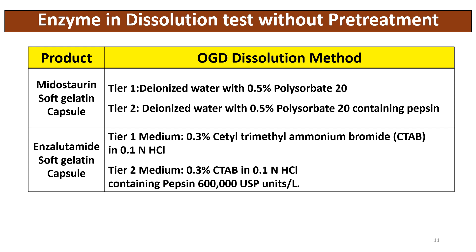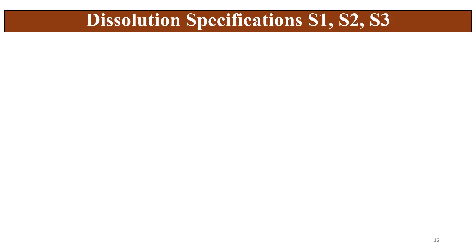As an example without pre-treatment: Midostaurin soft gelatin capsule and Enzalutamide soft gelatin capsule, as studied earlier. If no interaction is found between the enzyme and the surfactant, then pre-treatment is not required, and the dissolution can be run without pre-treatment.